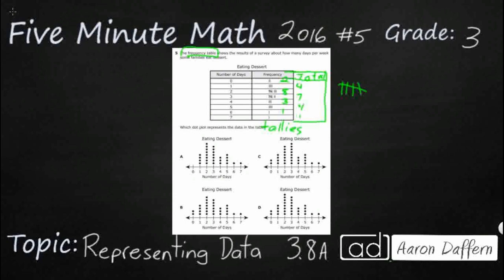Once we have these numbers, the next step is going to be to go ahead and put numbers on all of these dot plots. These are named dot plots — sometimes they're called line plots, just kind of depends. And what we need to do is put a number on top of each of these dot plots. It's like a bar graph and a pictograph put together.